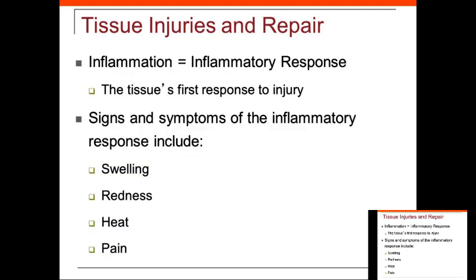Inflammation is the tissue's first response to injury. They used to say put ice on a sprain — they don't say that anymore. Ice slows down the healing. It's the right tool if you want to suppress pain, but if you're suppressing pain, you're suppressing inflammation and slowing down the healing process. The inflammatory process can be triggered by trauma, physical injury, or infections. Damaged cells release chemical signals like prostaglandins, proteins, and potassium into the surrounding interstitial fluid to promote inflammation, which promotes healing.